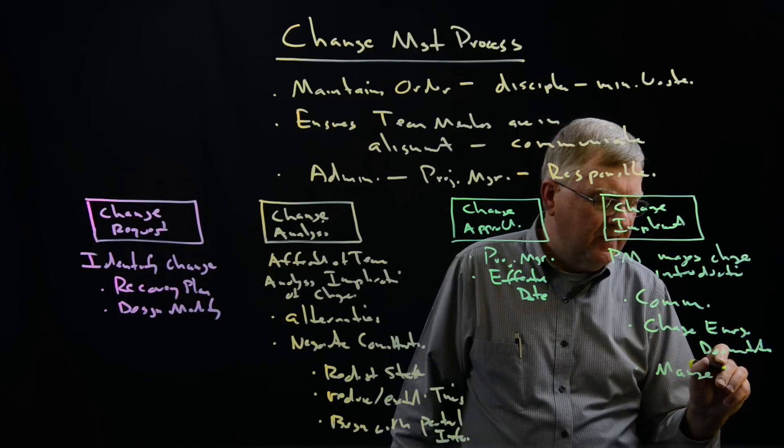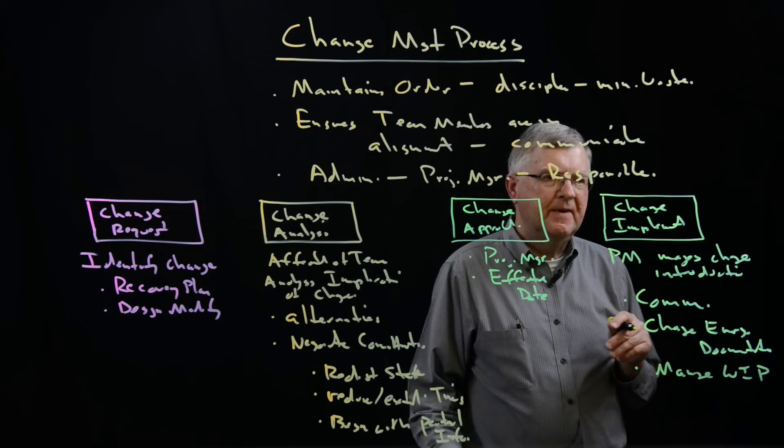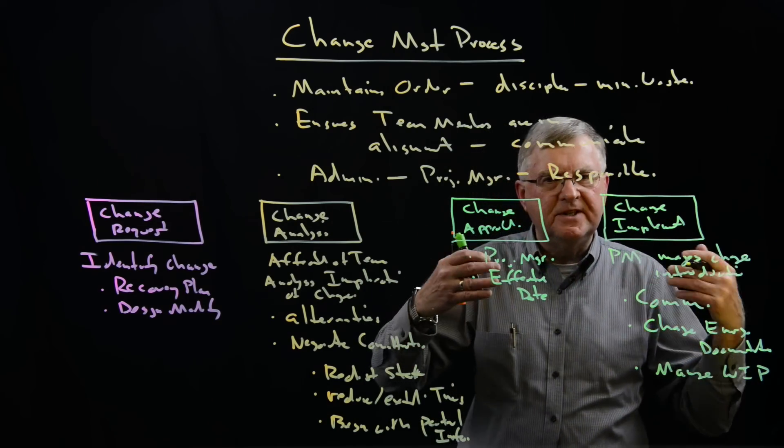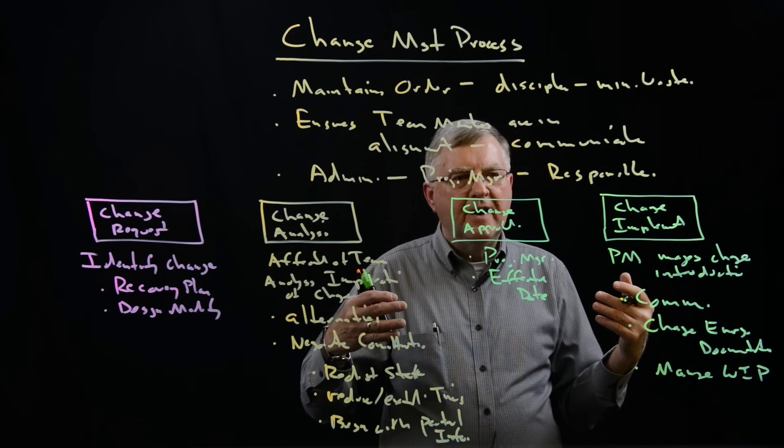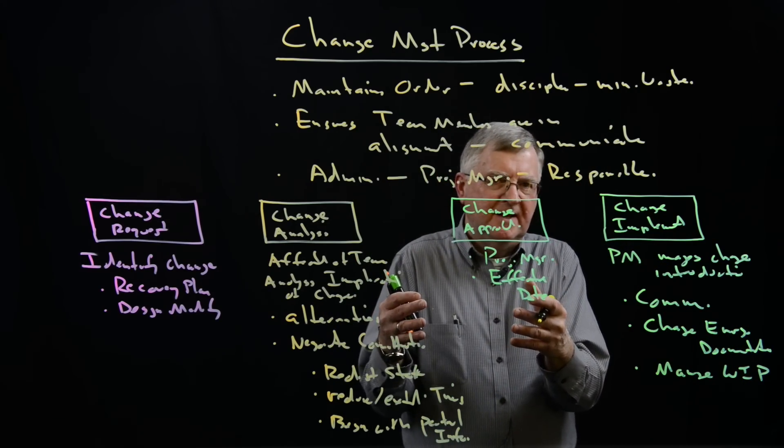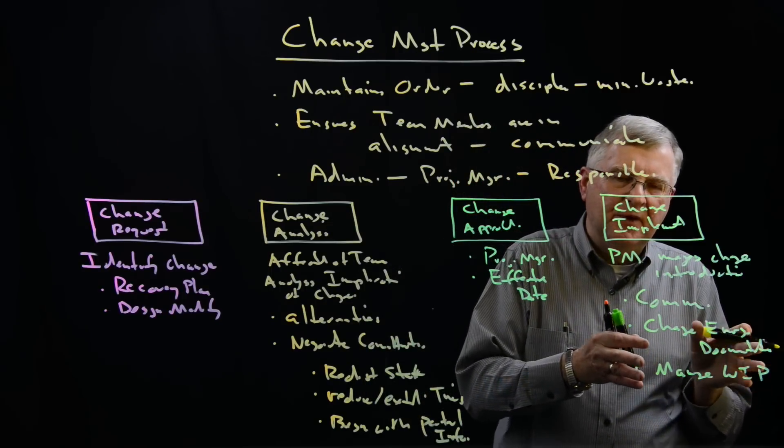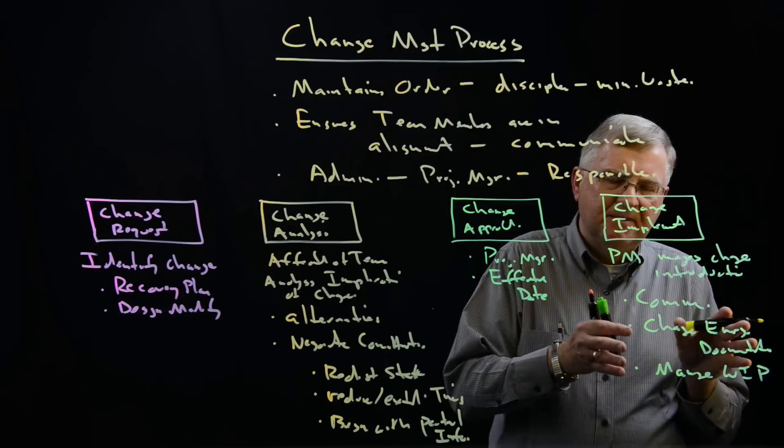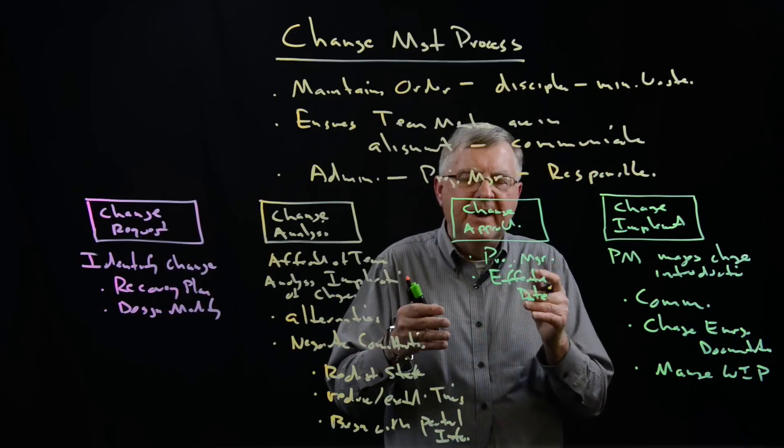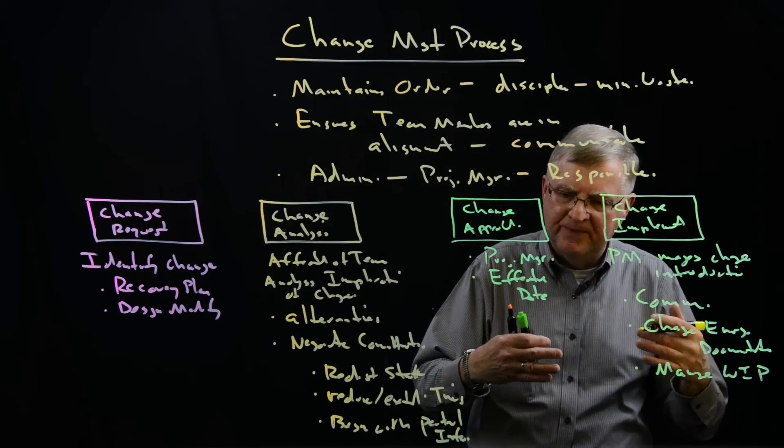We manage the work in process. We may have some parts being machined. We may have ordered some materials that are no longer pertinent to our particular design because we've changed things. The project manager oversees the management of the work in process to purge the system of the things we no longer need and to make sure the things we need as a result of the change are performed.